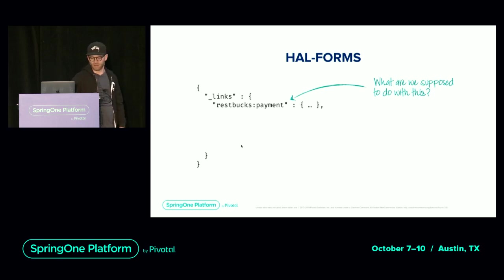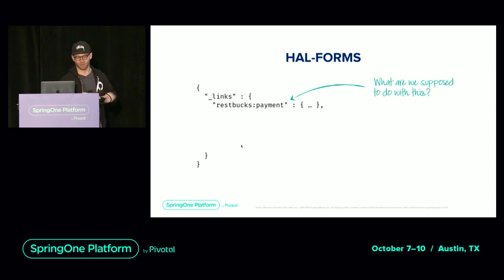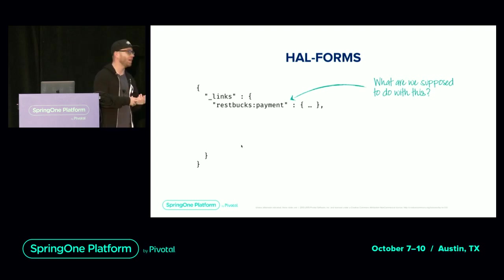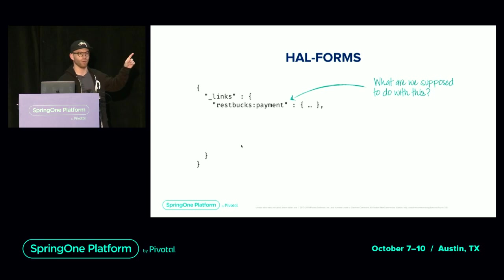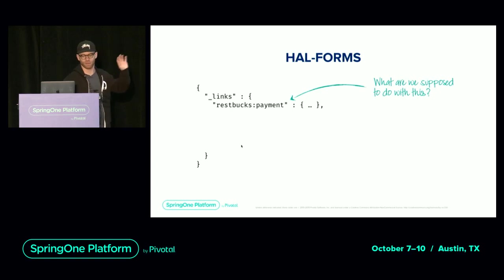Which HTTP method is supposed to be used, which fields to send, what format those fields have to be — none of this is obvious from just the link. Everything beyond that is what affordances are all about. The first thing we do for HAL and HAL Forms is we add a so-called CurieProvider. We basically tell it there's this magic restbox thing, and define a URI template that points to some arbitrary resource. Adding that CurieProvider to the Spring application context causes an additional link named 'curies' to be rendered.